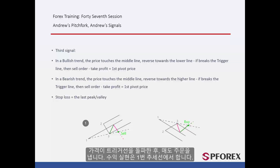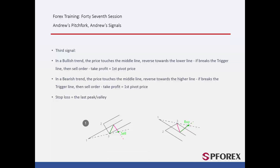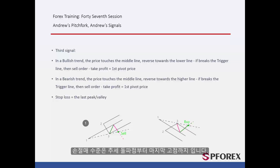After the price crosses the trigger line, a trader can place a sell order with TP price equal to the first pivot price. SL price is between the breakout point and the last peak.